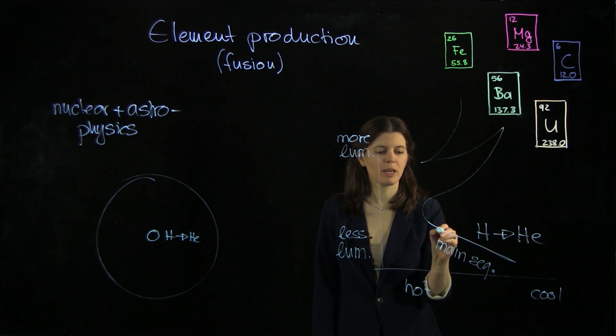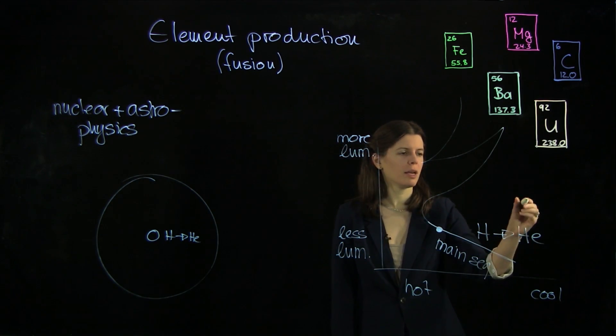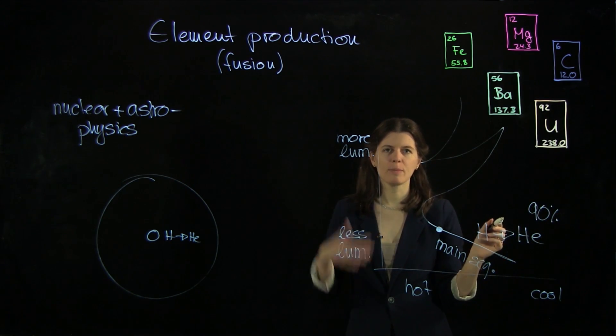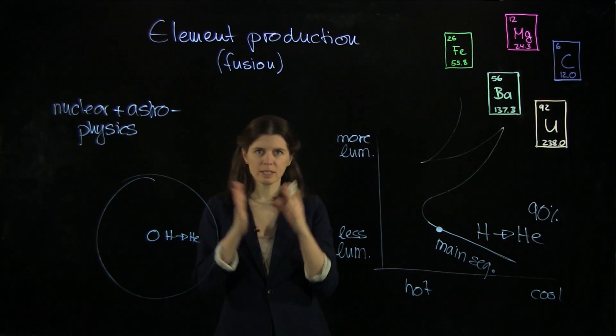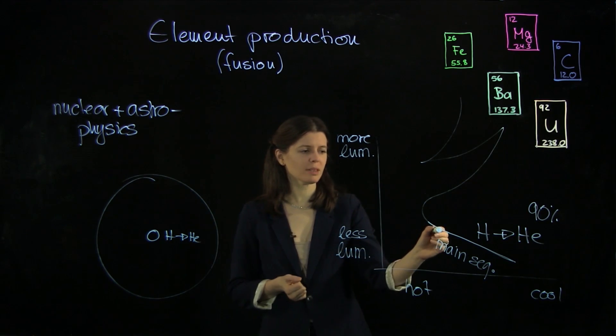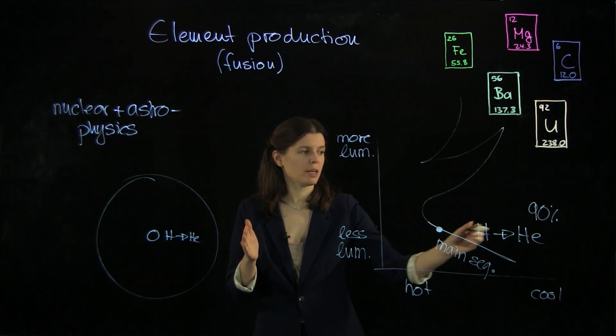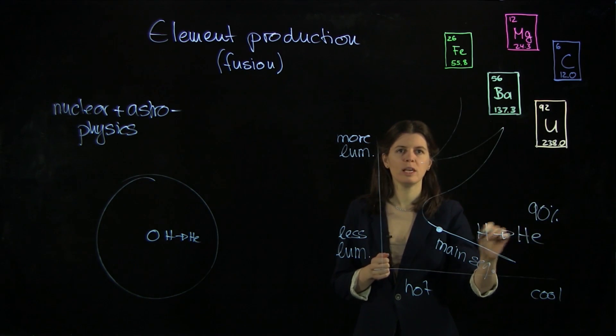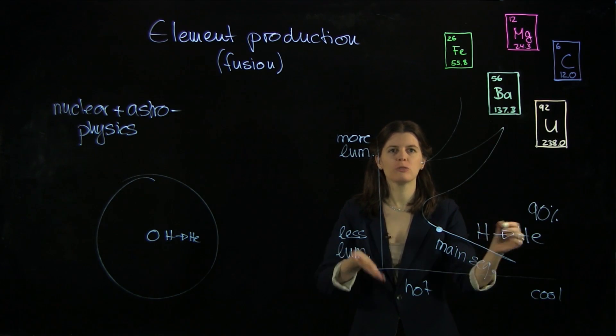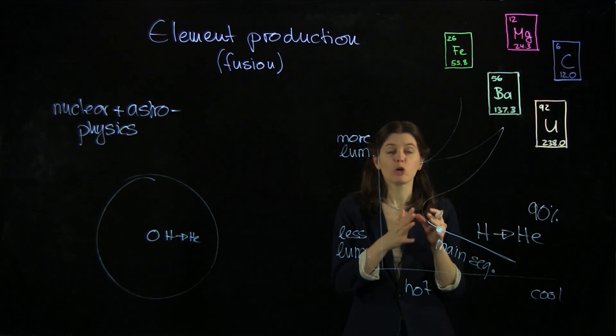The star will kind of start somewhere along the main sequence here, and it will stay there for about 90 percent of its lifetime, which means, coming back to the old stars for a second, 90 percent of 15 billion years is about the age of the universe. This means the stars that started here when they were born in the early universe are just at the end of this hydrogen to helium process, which really means they haven't done anything else but burning hydrogen to helium.